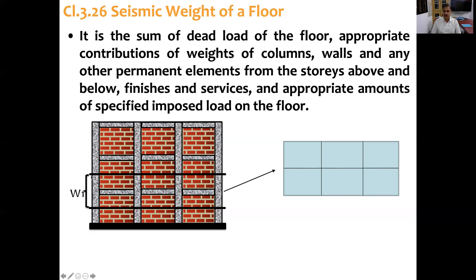Let C1 be the total load of all columns in the first floor and C2 be the total load of columns in the second floor. Similarly, WL1 is the wall load of all walls in the first floor, and WL2 is the wall load of all walls in the second floor. Note that walls have openings such as doors and windows, and we need to remove whatever percentage of opening is present from the wall load calculation.